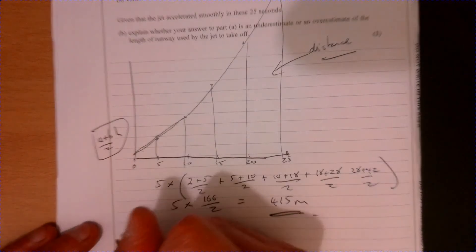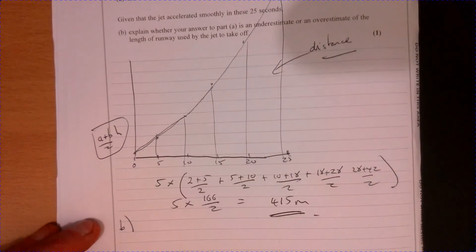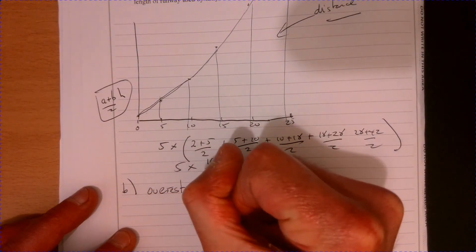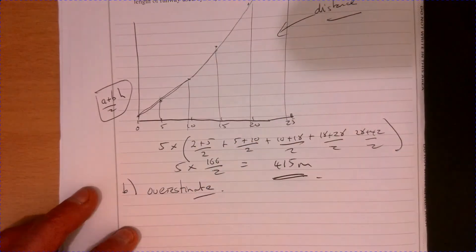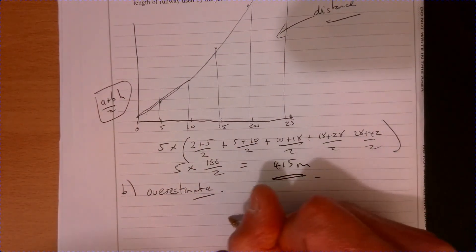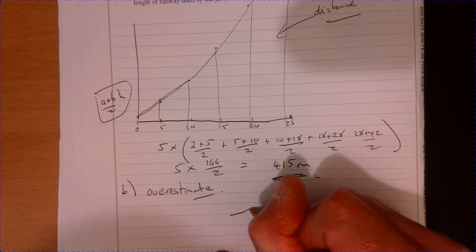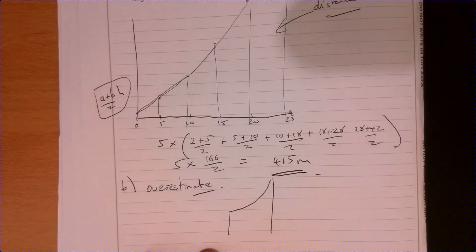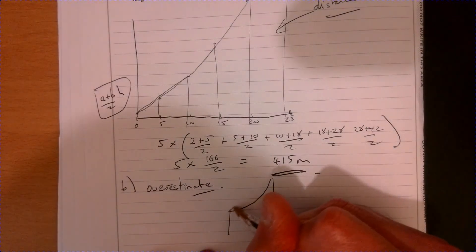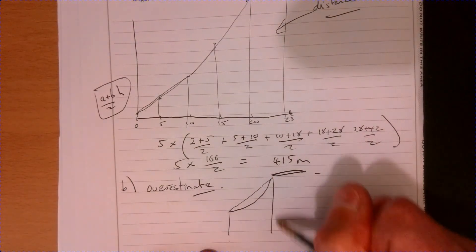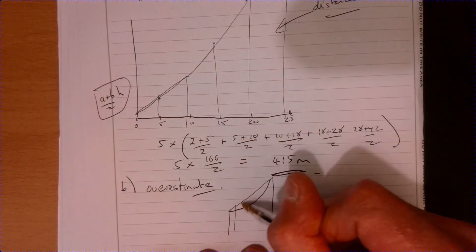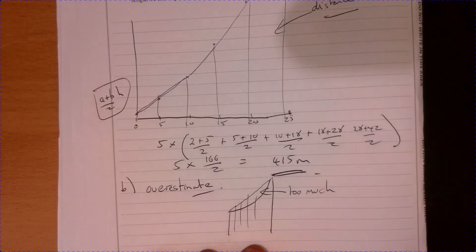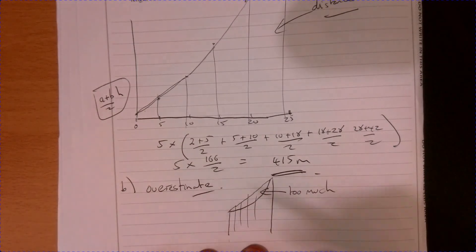Part b: it's actually an overestimate. What's happened is that the graph is a curve, and each trapezium sits above that curve. So we've worked out the area underneath the straight-line sections, which is too much — we've over-counted. Therefore it's an overestimate.